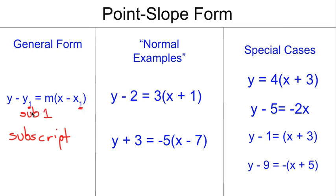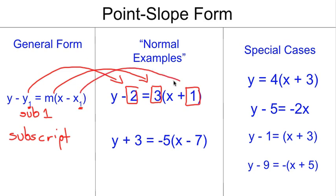And just as with others, we see that we have numbers that will replace all the variables except for y and x. So y sub 1 is a 2 in this first example, m is a 3, and x sub 1 is a 1. And we can look at the same thing down here. It's acceptable for these numbers to be positive or negative. So both of those will happen.